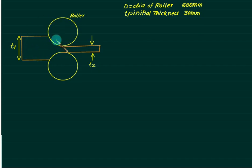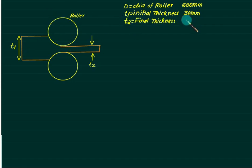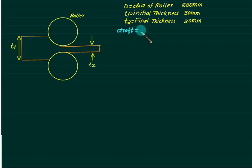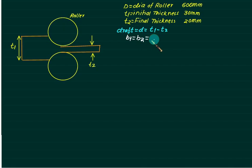Do not go by the actual figure — in reality the radius is very, very large. T2 is the final thickness, reduced to around 20 mm. The first term we introduce is called draft, defined as d = T1 minus T2. We assume here that B1 equals B2, so there is no change in width — that is the assumption.